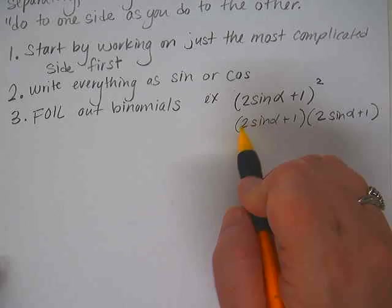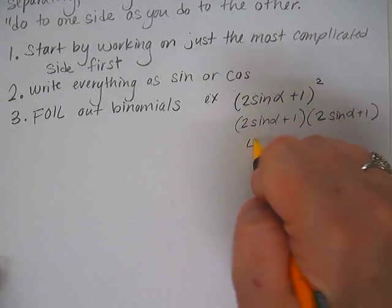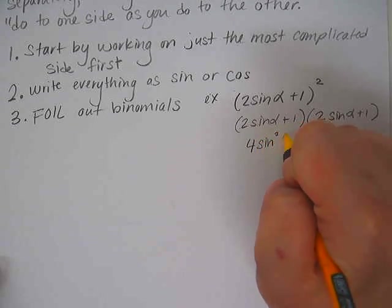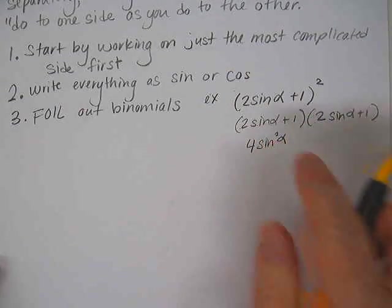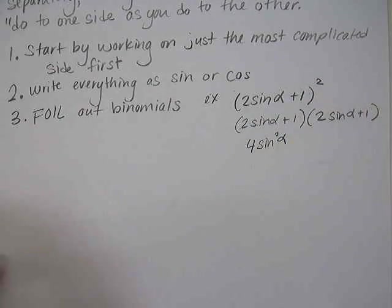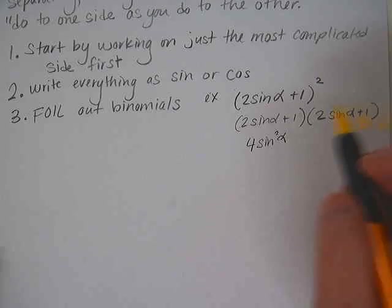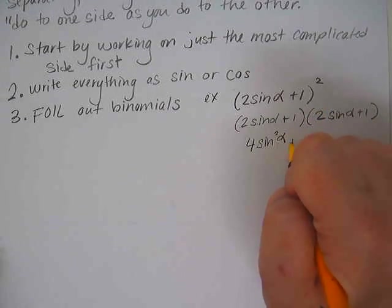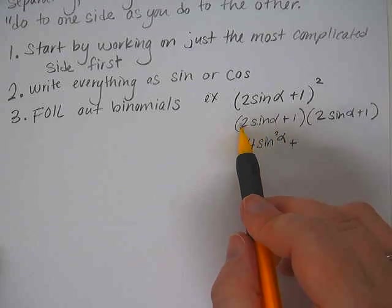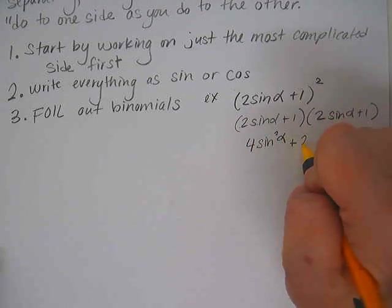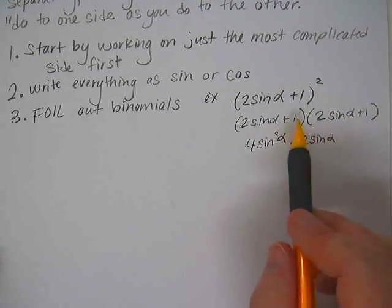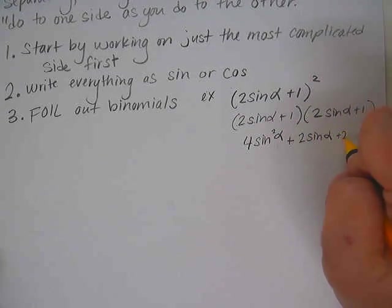First, outside, inside, last. Let's do that to make sure we understand the process. 2 times 2 would be 4, and sine alpha times sine alpha would be sine squared alpha. We put the squared there instead of putting parentheses with the squared on the outside, but either way means the same thing. That was just the first. Now let's do the outside. 2 sine alpha times 1 is just 2 sine alpha.